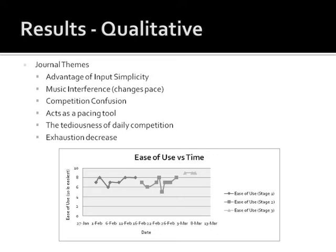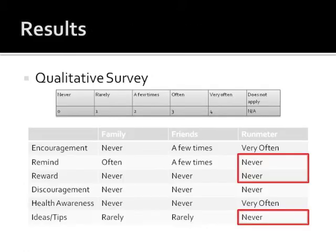Every time I ran, I rated Run Meter's ease of use on a 1 to 10 scale. The bottom graph shows that while I encountered some usability issues during the first and second stages of the study, I was relatively satisfied with Run Meter's usability by the end. Every question in the qualitative survey was answered as either never, rarely, a few times, or very often. This scale allowed me to find specific shortcomings of Run Meter's computer-facilitated motivation. Some of the major shortcomings included the lack of reminders, the lack of rewards, and the lack of exercise ideas and tips.